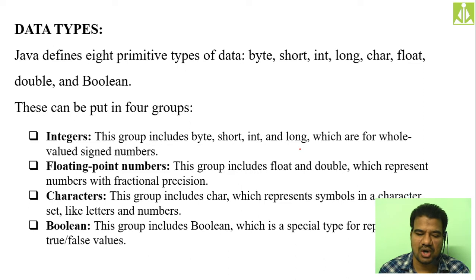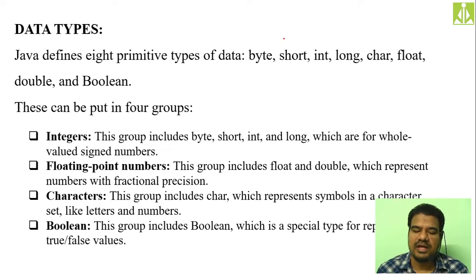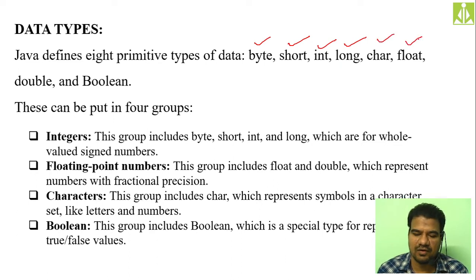Starting with byte, short, int, long — these four are similar to C and C++, except the 'byte' type is new in Java. In C and C++ we had short, int, long, and long long; but instead of long long we got byte here. Byte is smaller than short. Then we have char, float, double, and boolean — only these eight different types, no complex types or imaginary types.